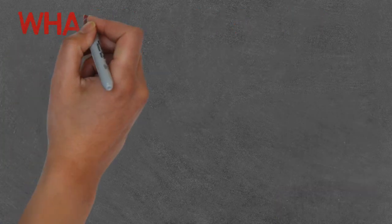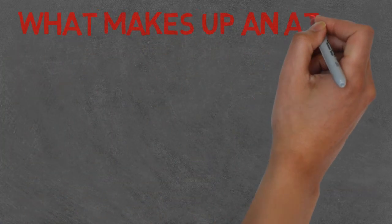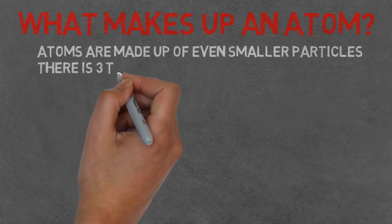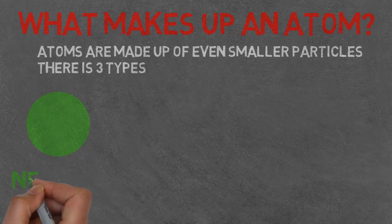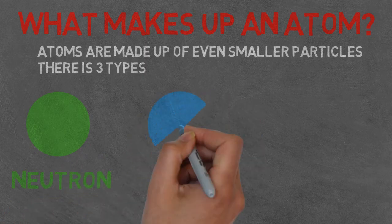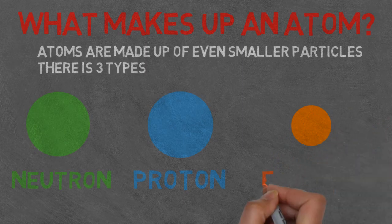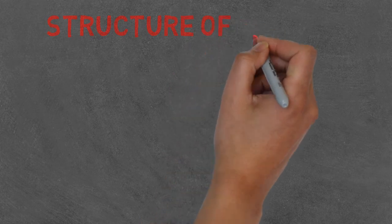So what makes up an atom? Well, atoms are made up of three even smaller particles, which are called neutrons, protons, and electrons. Now that we know what an atom is and what it's made up of, we can look at how these form its structure.